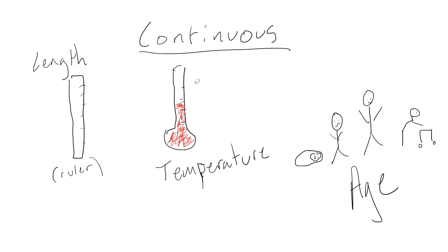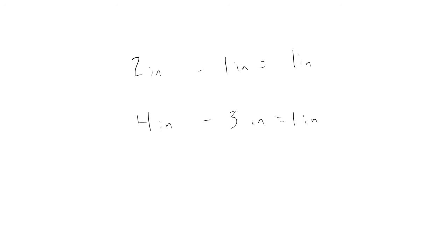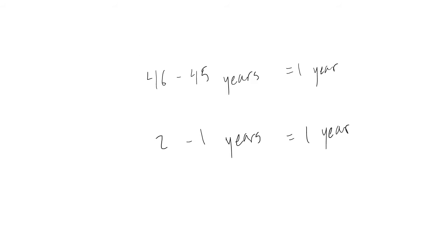A variable is continuous if a one-unit increase in the variable means the same thing across values of the variable. Common examples of continuous variables include length, temperature, and age. For example, an increase of 1 to 2 inches is the same amount as an increase of 3 to 4 inches. The time that passes between the ages of 45 and 46 years old is the same as the amount of time that passes between the age of 1 and 2 years old.